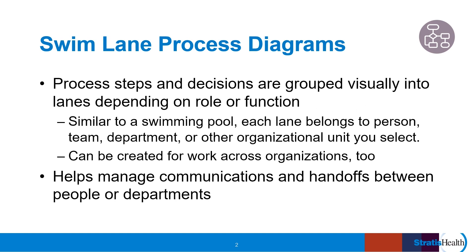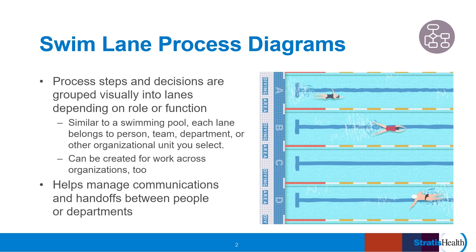Swim lane diagrams are another type of flow chart. They show a process from start to finish. The swim lane diagram differs from a basic flow chart in that processes and decisions are grouped visually by placing them in lanes, much like a swimming pool. Parallel lines divide the chart into lanes, with each lane representing a person, team, department, or other organizational unit that you select.